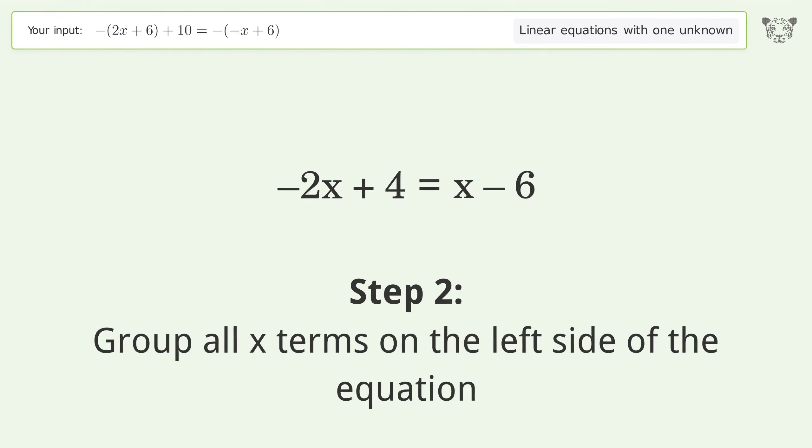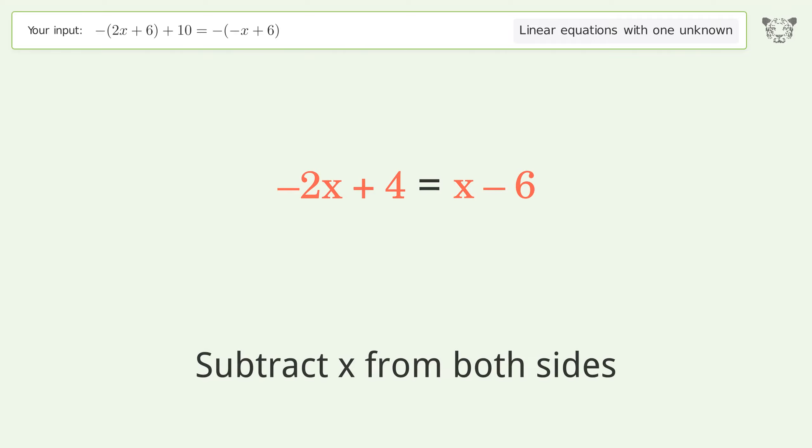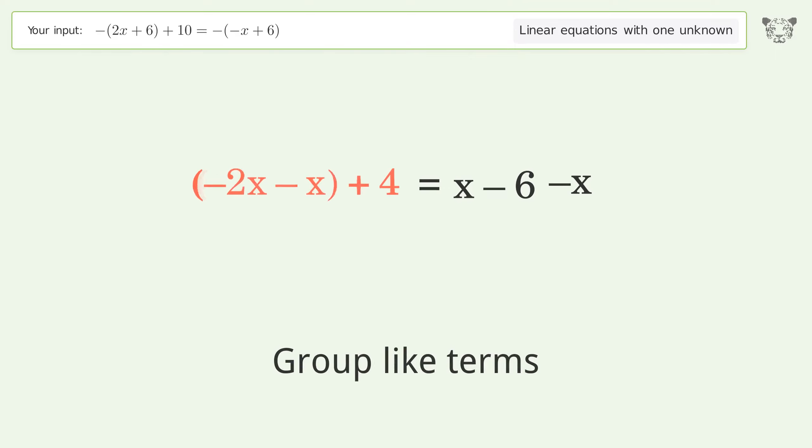Group all x terms on the left side of the equation. Subtract x from both sides. Group like terms. Simplify the arithmetic.